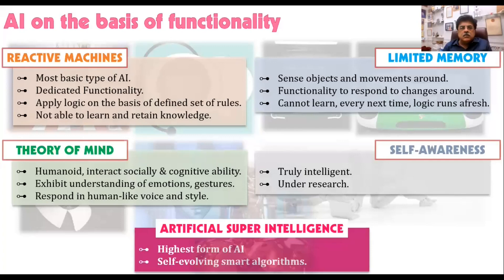Reactive machines also do not learn from data. Then we have theory of mind — these machines are more intelligent and capable of responding in a very social way. They try to understand the emotions of the user, interpret gestures and facial expressions, and respond accordingly in a human-like voice. Sophia the robot is an example of theory of mind. Then there is a fourth category still under development — showing true intelligence like human beings. We are also conceiving an artificial super intelligence, the highest form of AI, which can think faster than humans, is more intelligent than humans, and these are self-evolving machines able to program themselves — those who have seen movies like Terminator can visualize that.